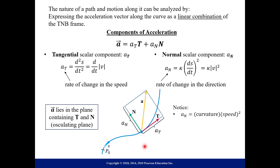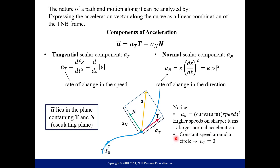Looking at the formula for the normal component of acceleration: it's curvature times speed squared. Higher speeds on sharper turns mean a larger normal acceleration, since curvature is bigger on sharper turns and speed is higher. Also, if you're traveling at constant speed around a circle, you're not changing your speed, so the tangential component a_T would be zero — that component in front of T would vanish.